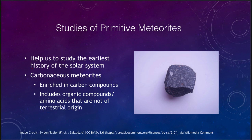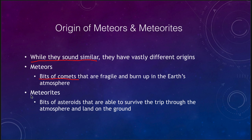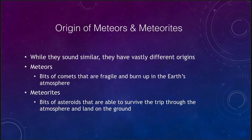So where did these meteors and meteorites come from? Even though they have similar-sounding names, they have very different origins. Meteors are bits of comets — they are fragile and burn up in the Earth's atmosphere, and the vast majority are tiny objects left behind by a comet that never make it down to Earth. Meteorites, on the other hand, are generally larger bits of asteroids — large enough and sturdy enough to survive the trip through the Earth's atmosphere and land on the ground, where we can actually study them.